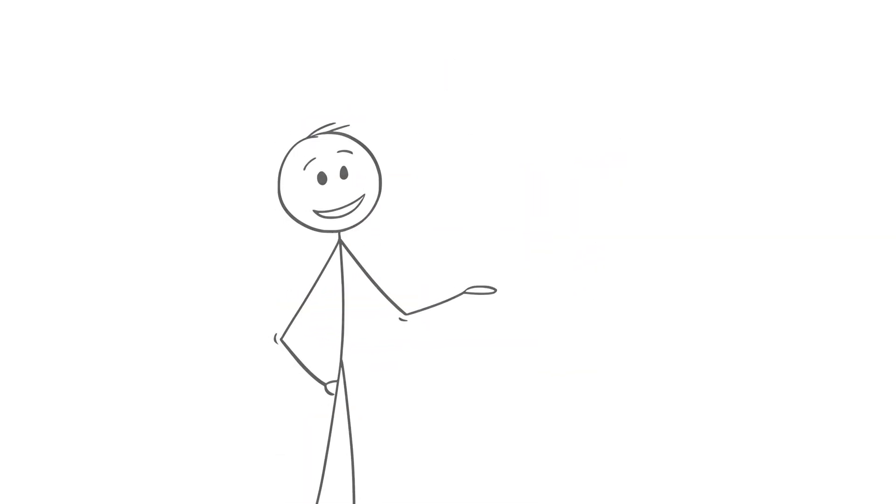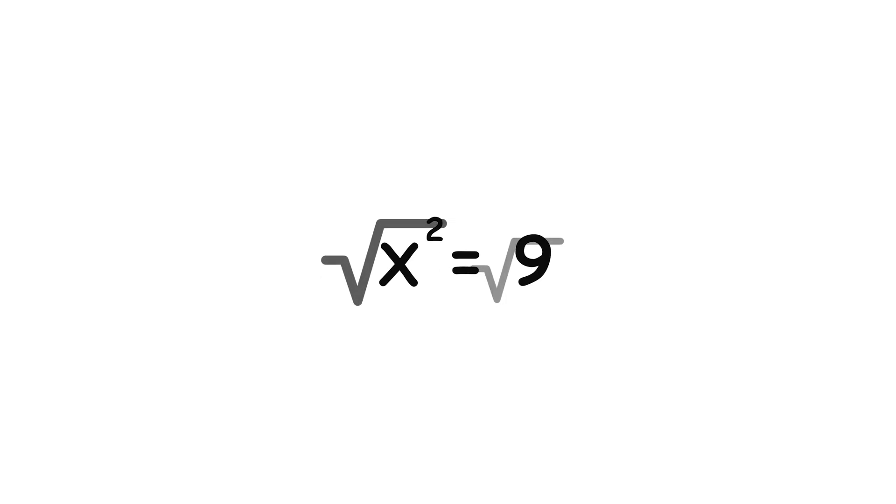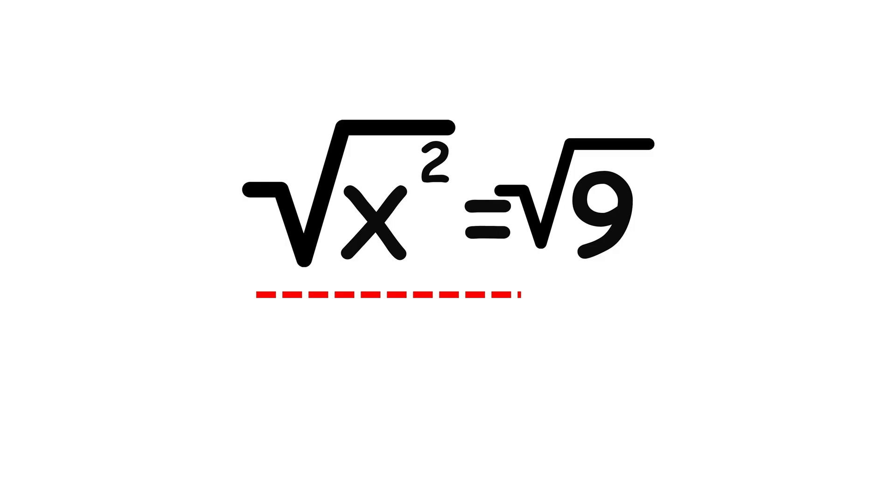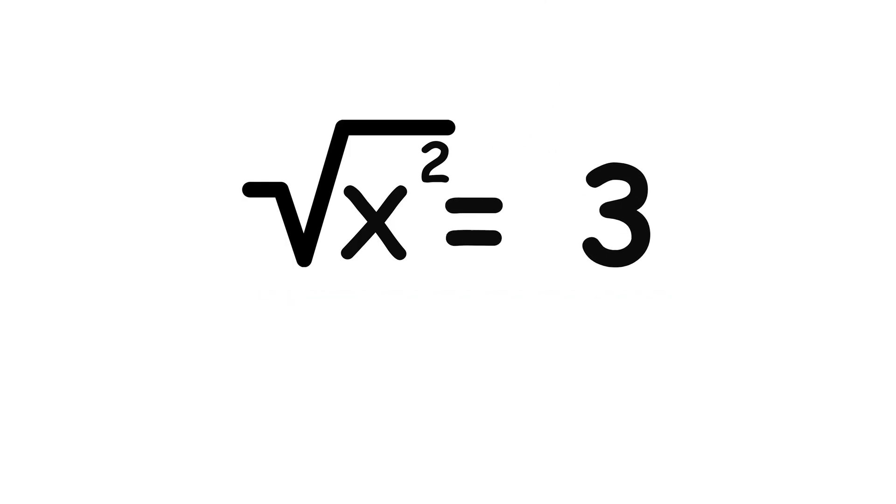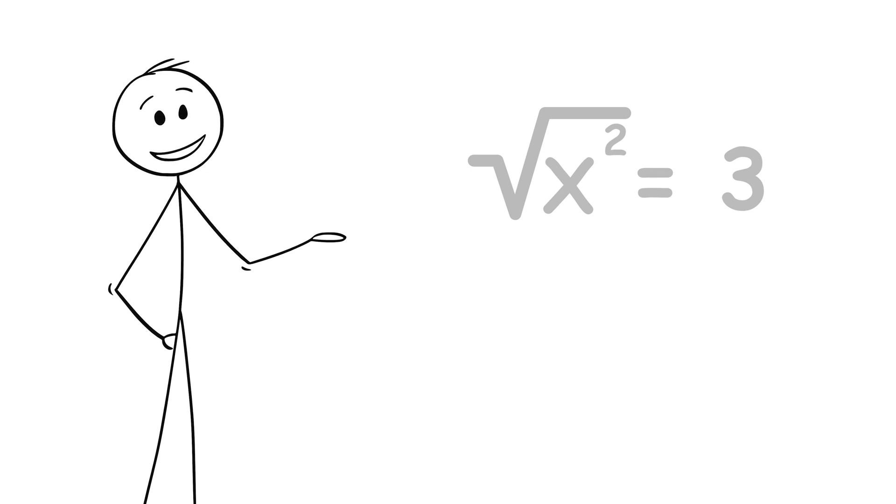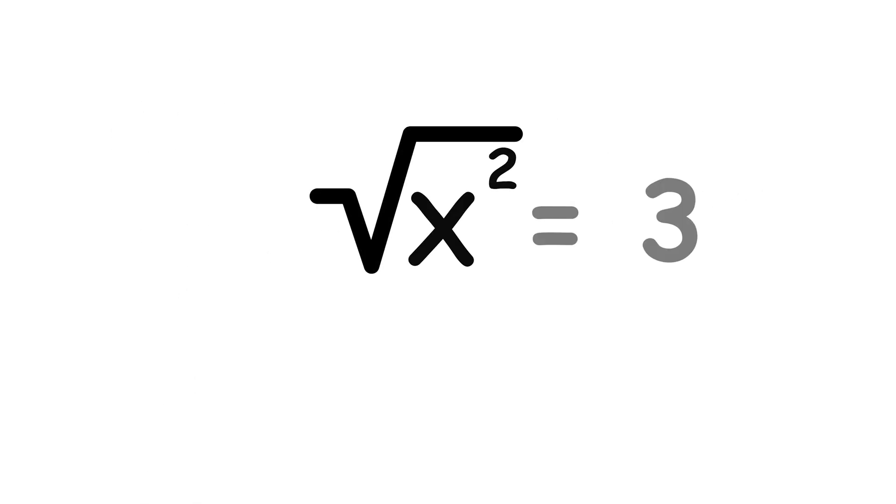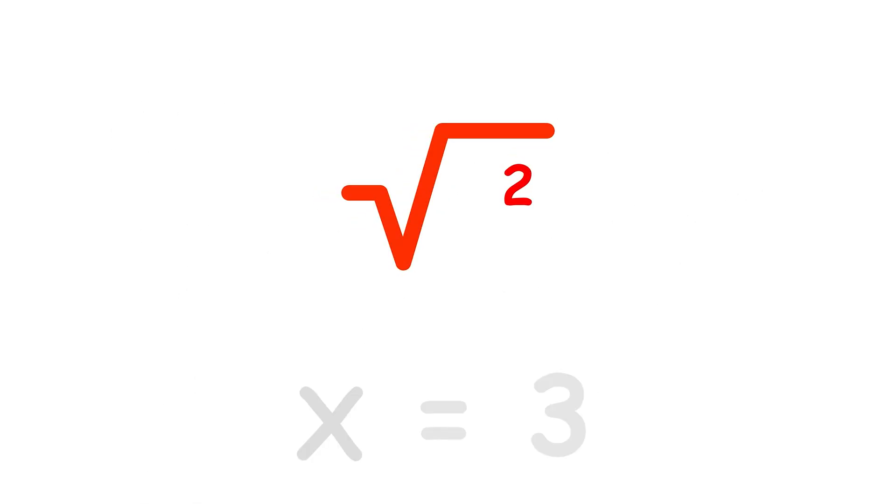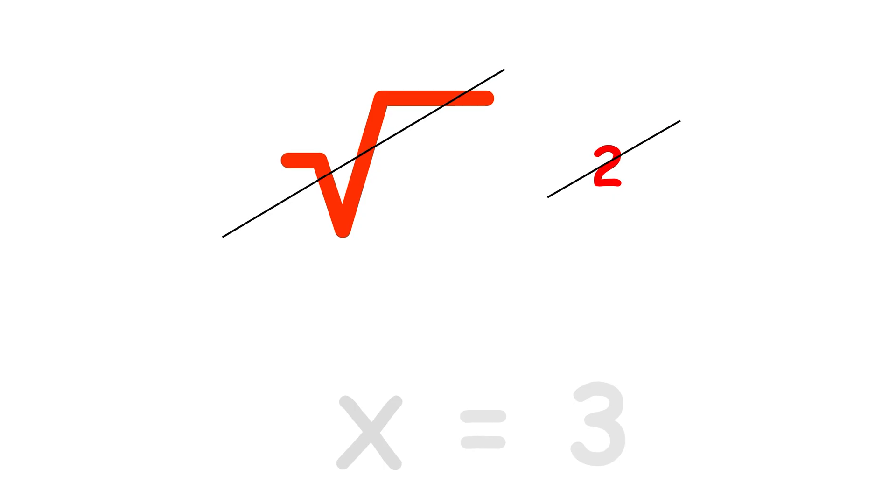First, consider the equation x squared equals 9 again, and take the square root of both sides. Square root of x squared equals square root of 9. The right side is simply 3. We don't need to worry about a plus or minus at the moment. On the left, you may think that the square root and the square fully cancel each other out. But this is not actually the case.